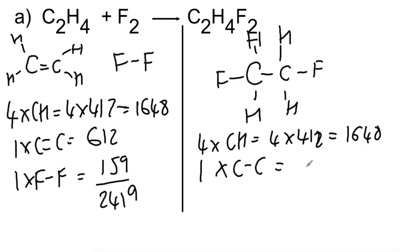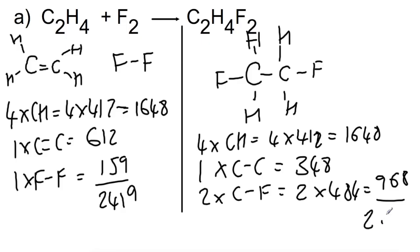And we've made two carbon to fluorine bonds, which are each 484. That gives a total energy release of 2964. And to do our enthalpy change, we do the breaking 2419 minus the making 2964 to give us a value of minus 545.